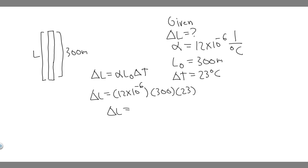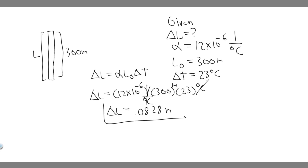When you go ahead and do this, you're going to get delta L is equal to 0.0828. Keep in mind the units: the temperature is in degrees Celsius, alpha is inverse degrees Celsius, and the length is in meters — so those cancel and delta L is in meters. The change in length is going to be 0.0828 meters. This is how much its height changes between these months, and that's your answer.